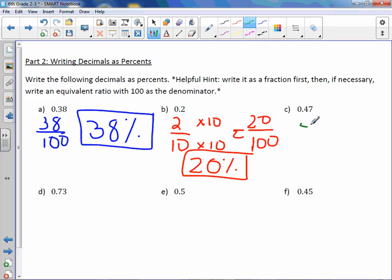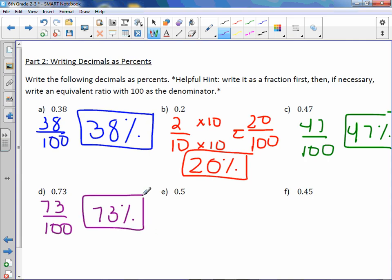Letter C is 47 hundredths. I have 100 as the denominator, therefore the percent is simply 47%. Letter D: 73 hundredths. The denominator is 100, so the percent is simply 73%. You should be looking for a pattern. There's something going on.